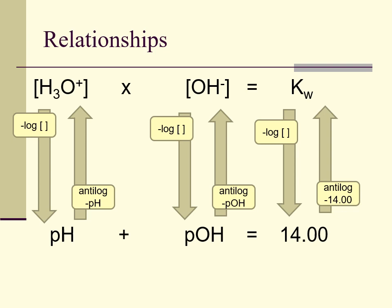This graphic organizer shows how they are related, where the top line shows hydronium and hydroxide as a product producing KW, and below how pH and POH actually combine to equal exactly 14. If you know the hydronium ion concentration, you can find the pH or vice versa, and the same thing with hydroxide. So that's a review of that section.